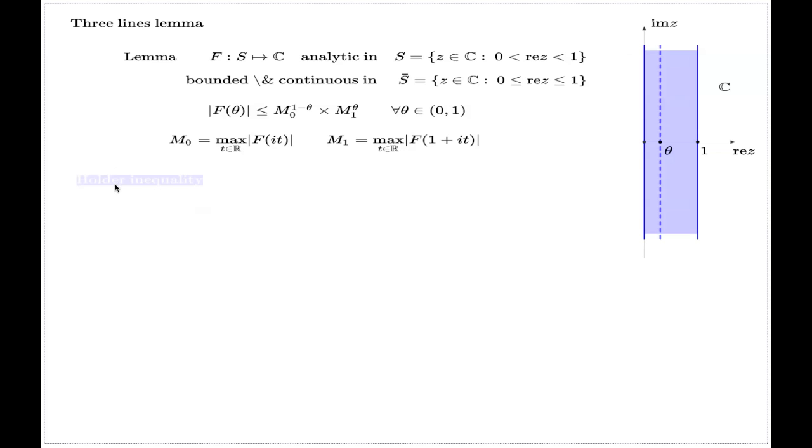Now I can show you how we can prove the Hölder inequality again with the help of this three-lines lemma. The technique is really powerful, it enables lots of different adjustments and generalizations. So you have two functions, little f from Lp and g from Lq, and remember the exponents p and q are connected by this relation. All you have to do is consider this function on the complex plane.